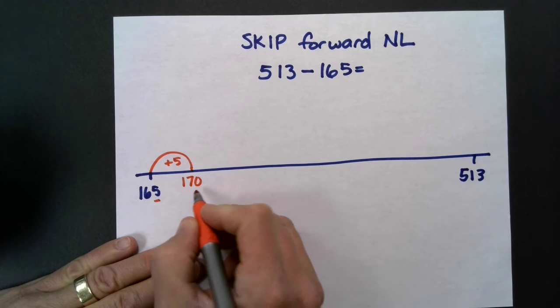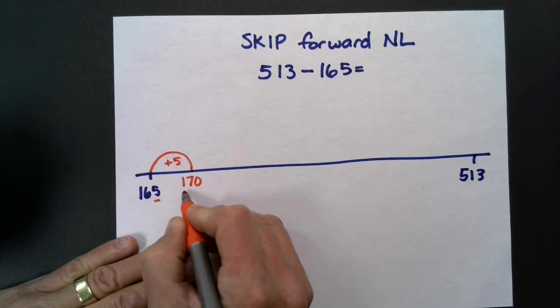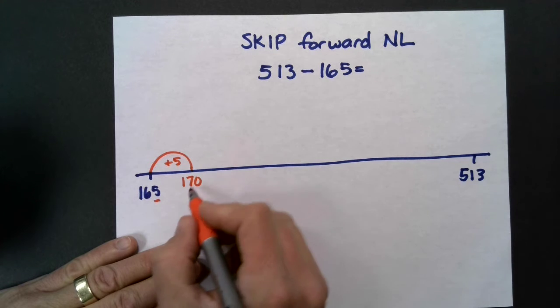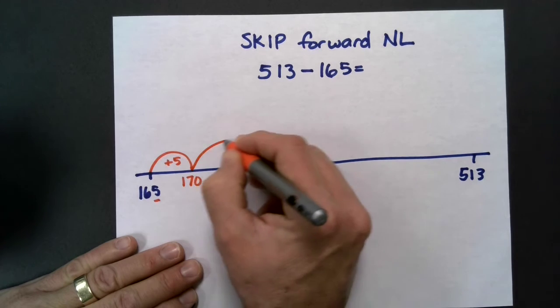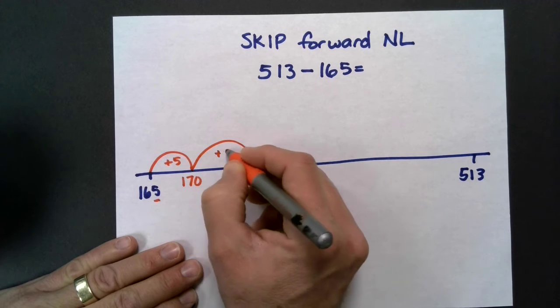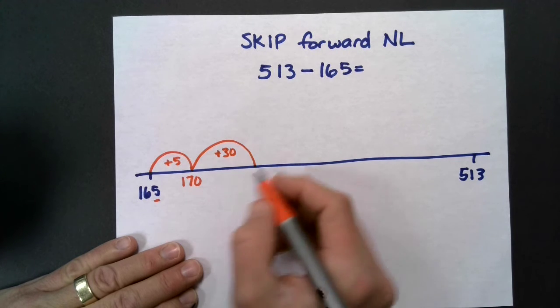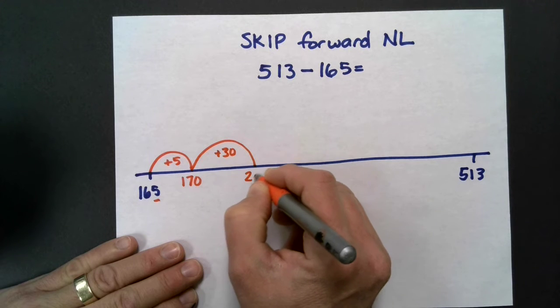Now that I'm at 170, I ask myself, what can I add to make the number easier to skip from? I see 70, so I can add 30 because I know 3 plus 7 is 10, so 30 plus 70 is going to be the next 100. So 170 plus 30 is 200.